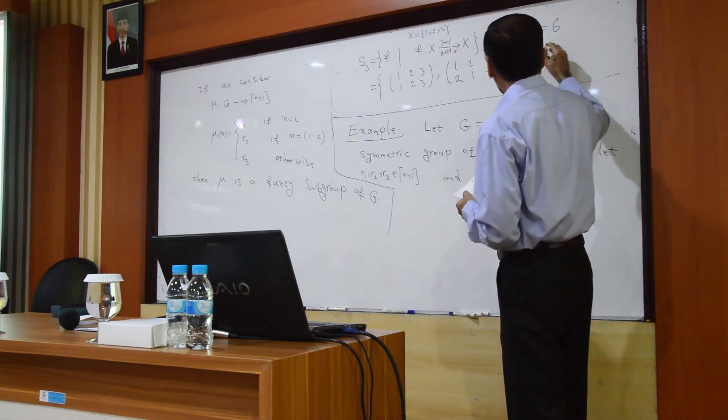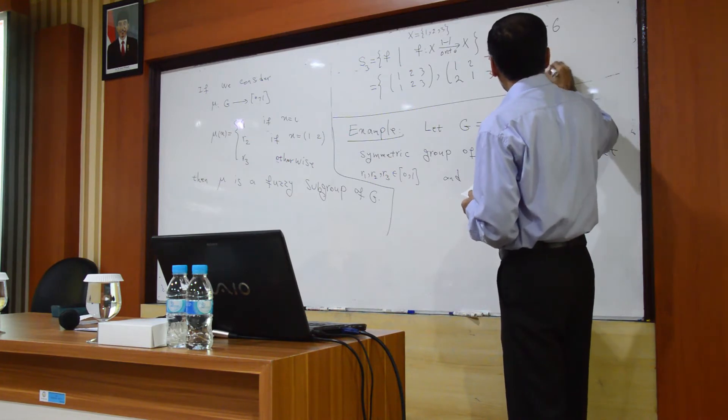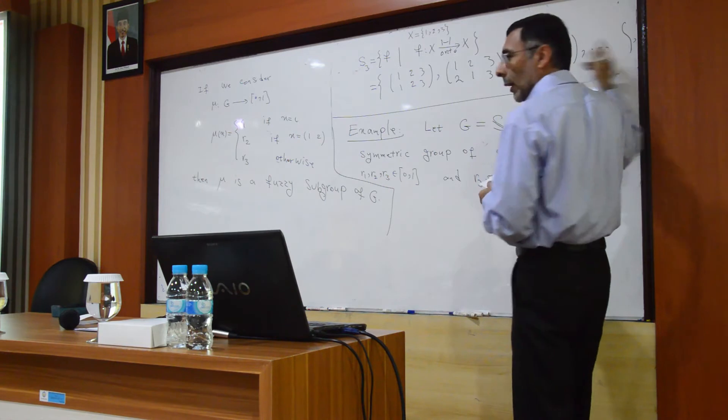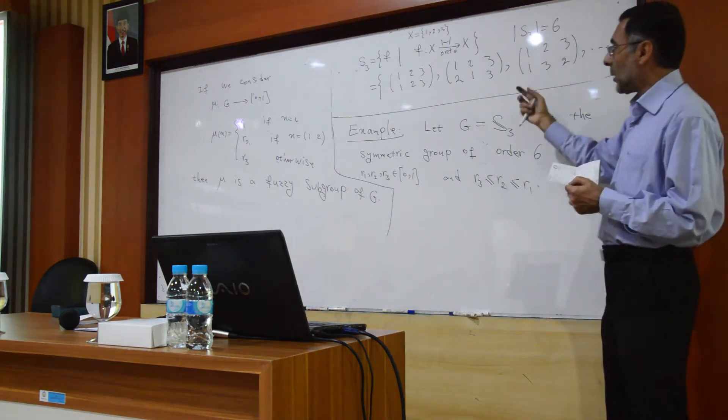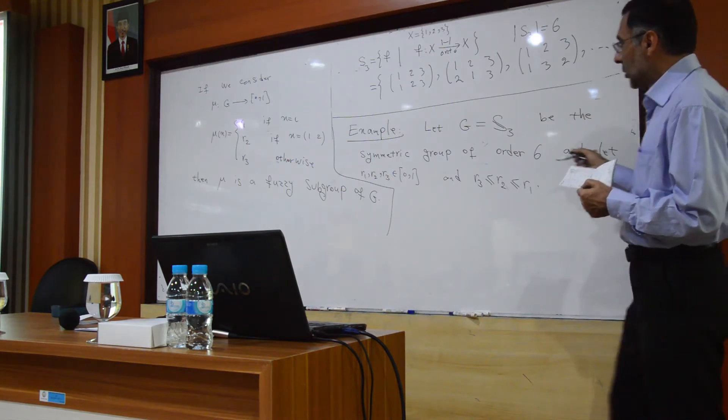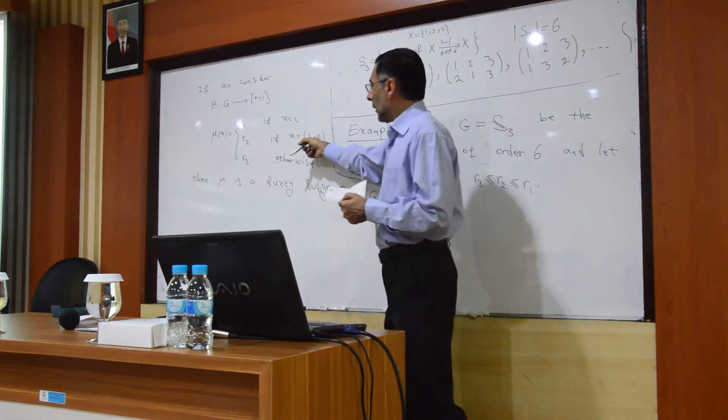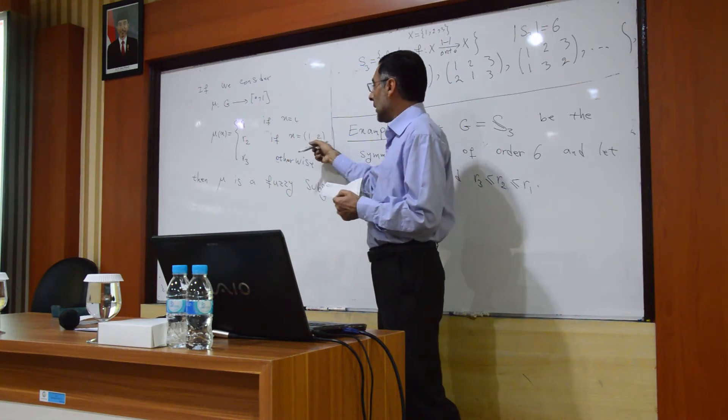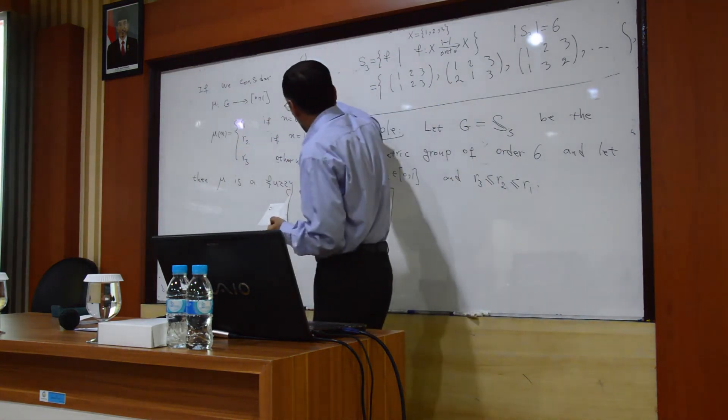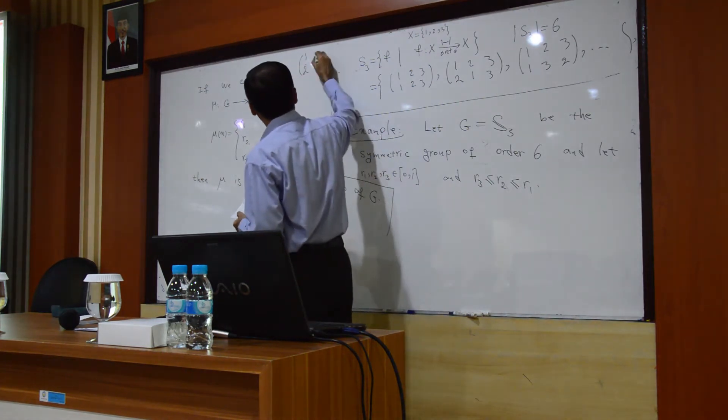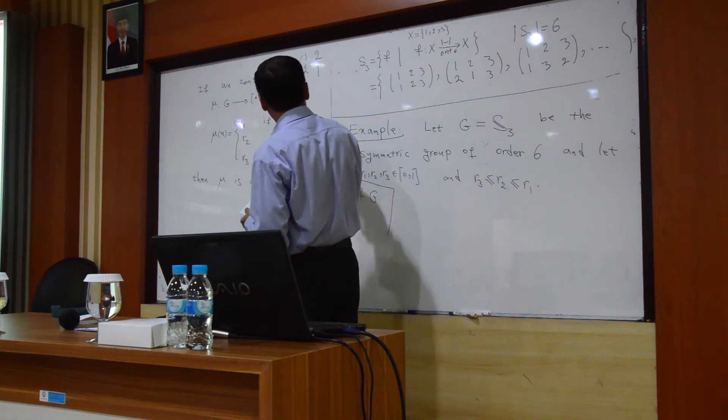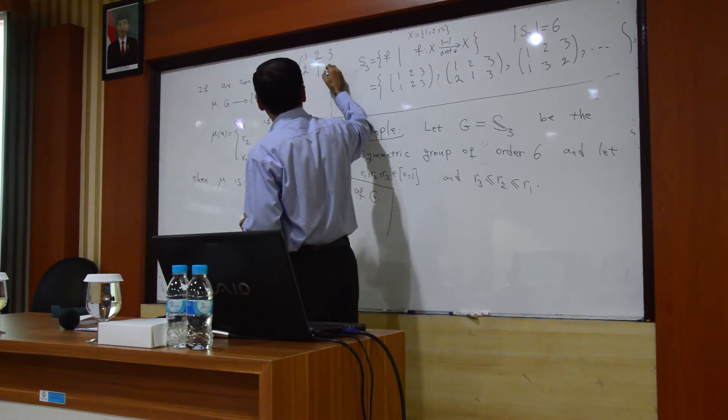And sometimes maybe we use simple notation like this: x equal to (1 2), means that 1 go to 2, 2 go to 1, we have nothing, so 3 go to 3.